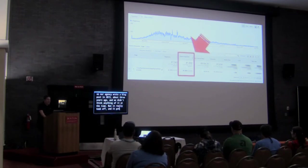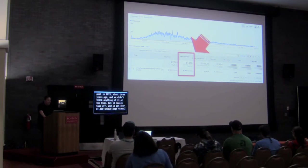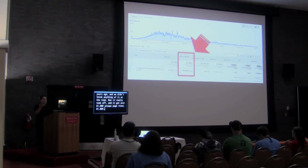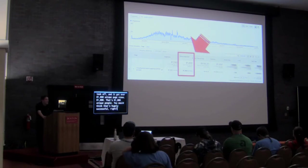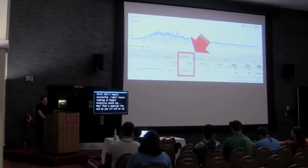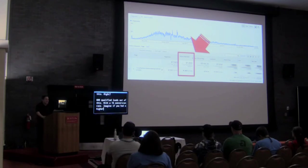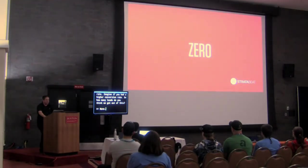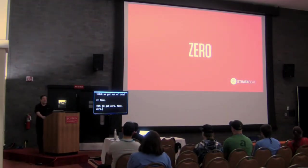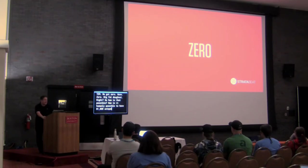You would think that that's hugely successful. Anyone looking at Google Analytics would say, wow, that's amazing. We looked at it and said, okay, for this type of page view volume, even if we had a 1% conversion rate, we should have gotten 800 qualified leads out of this. How many leads do you think we got? We got zero. None. Big fat donut. How is it humanly possible to have 81,000 unique page views and have zero leads? It's a huge failure.